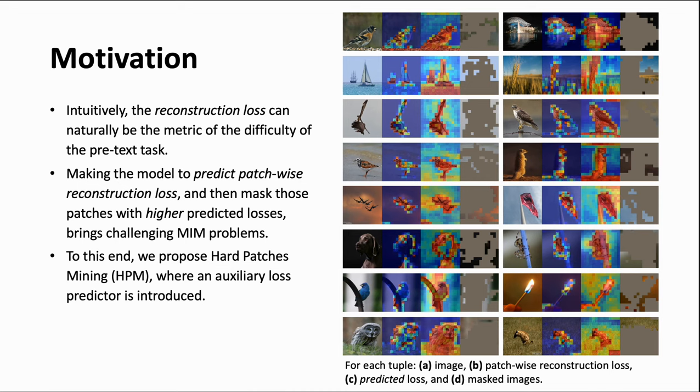Therefore, making the model predict patch-wise reconstruction loss first and then mask those patches with higher predicted loss brings challenging MIM problems. To this end, we propose Hard Patches Mining, HPM, where an auxiliary loss predictor is introduced.